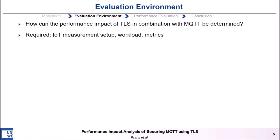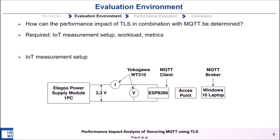Now, to analyze the performance impact of MQTT using TLS, we need an IoT measurement setup, workloads, and bandwidth metrics so that we can compare MQTT with and without TLS. We chose an ESP microcontroller to run an MQTT client, which can use all three quality of service levels. We power the ESP using a lab power supply module, since it can directly provide the 3.3 volts required by the ESP. To measure the energy consumption of the ESP, we use the Yokogawa as a power meter. The MQTT client on the ESP sends messages to an MQTT broker running on a Windows 10 laptop via an access point.